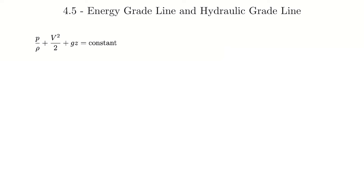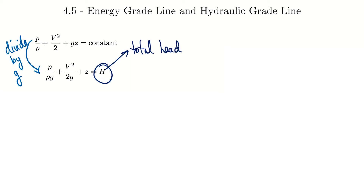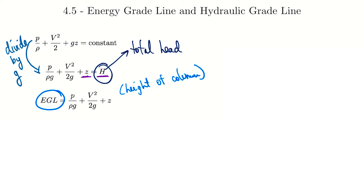The final thing in section four is to look at the energy grade line and hydraulic grade line — really just a visualization tool. We take our Bernoulli equation expression and divide by g, giving us this expression where instead of equaling a constant we call that the head. That capital H is the total head of the flow. Each term must have the same units — the Z term has units of distance — so the total head is measured in distance. This total head represents the total energy of the flow, all terms in the Bernoulli equation, and we can call it the EGL — energy grade line — corresponding to a height value. We can simply draw that into a figure.